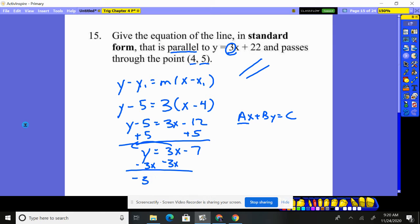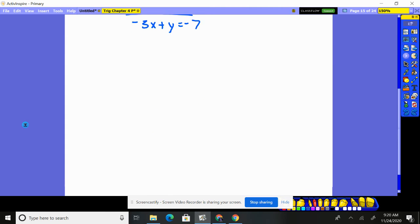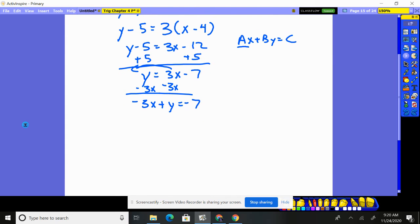I have -3x + y = -7. Now, I cannot have a negative. Can't have it in front. Can't start with a negative. So I control that by multiplying everybody through by -1.